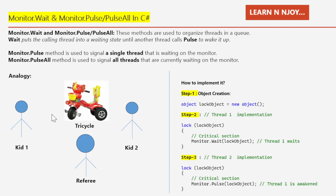Let's try to understand Monitor.Wait and Monitor.Pulse with the help of an analogy. We have two kids — Kid One and Kid Two — and a referee. They want to ride a tricycle. Think of a shared resource like a tricycle that two kids want to ride, but only one kid can use it at a time. The monitor is like a referee.